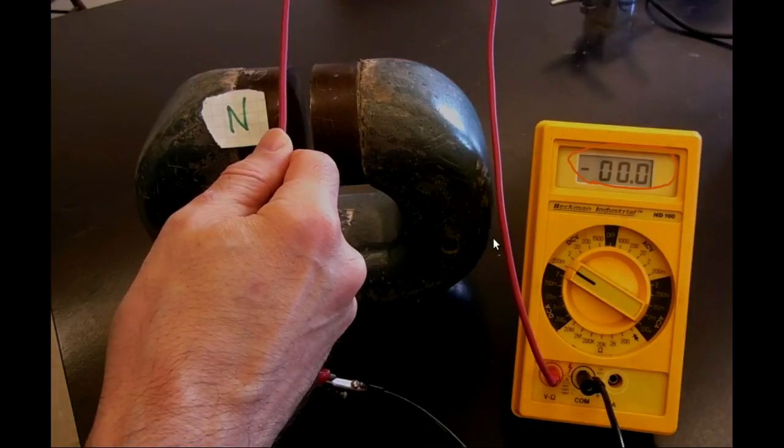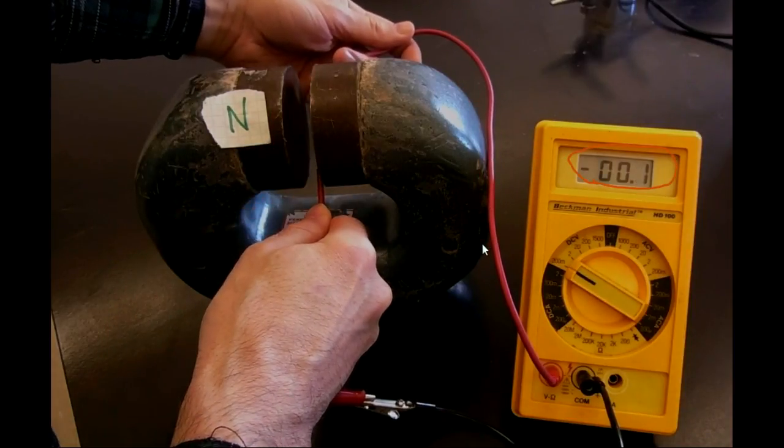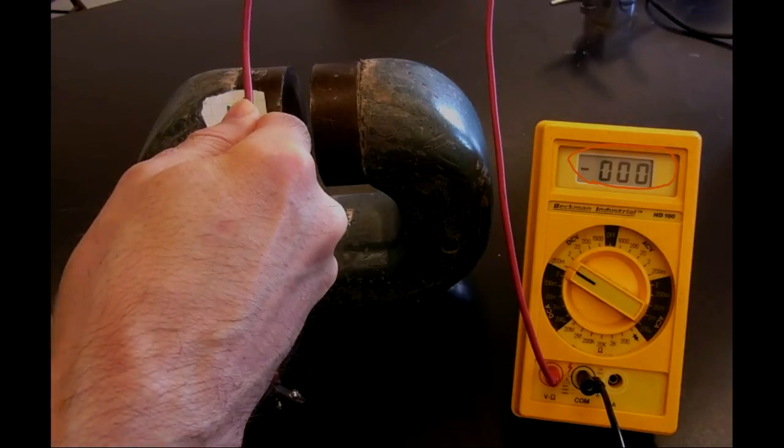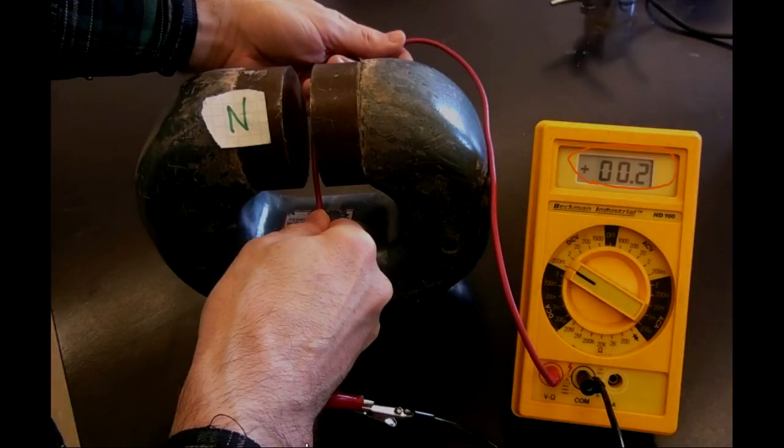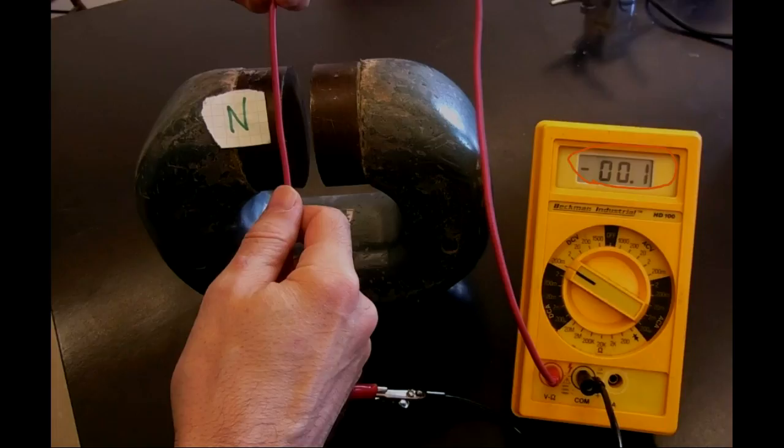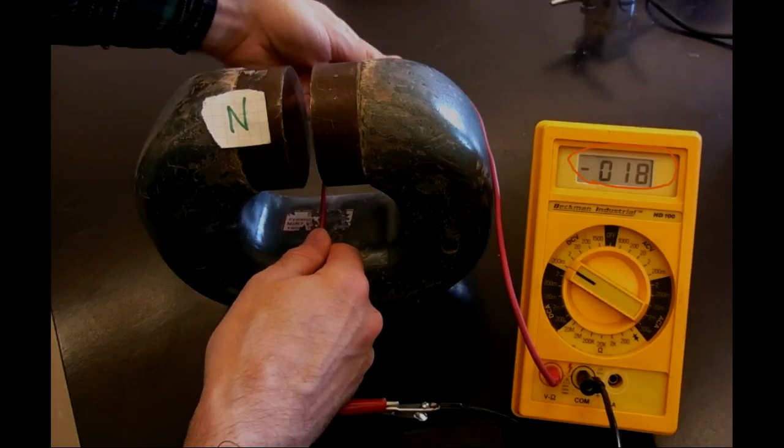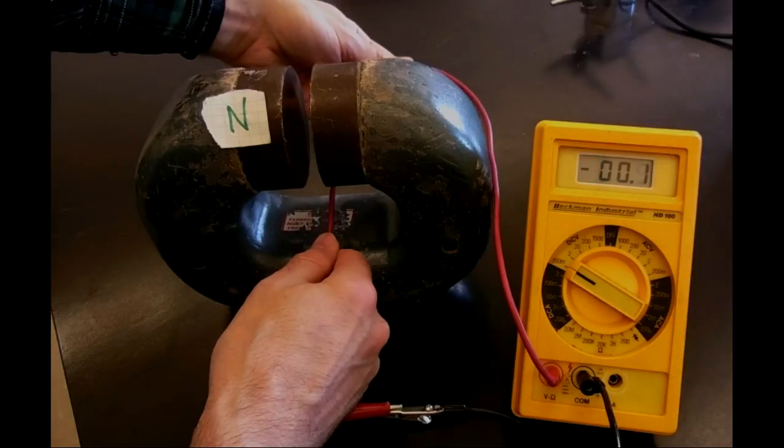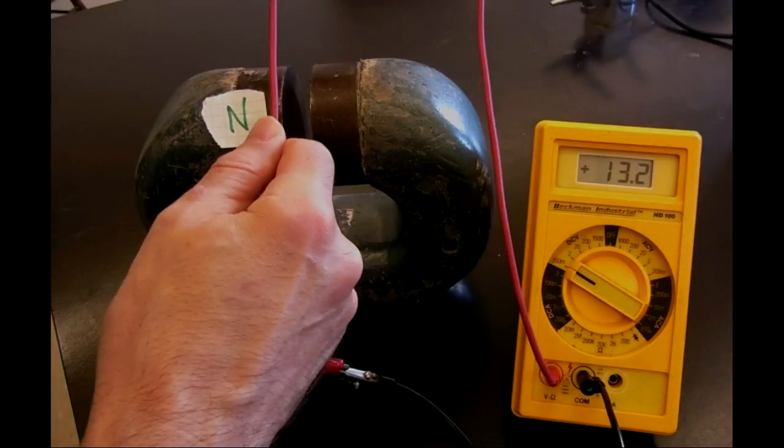And notice that there is a potential difference detected by the voltmeter when I do this. In particular, notice that when I move the wire one way, this way, the measured potential difference comes out negative. But when I move it the other way, the measured potential difference comes out positive.